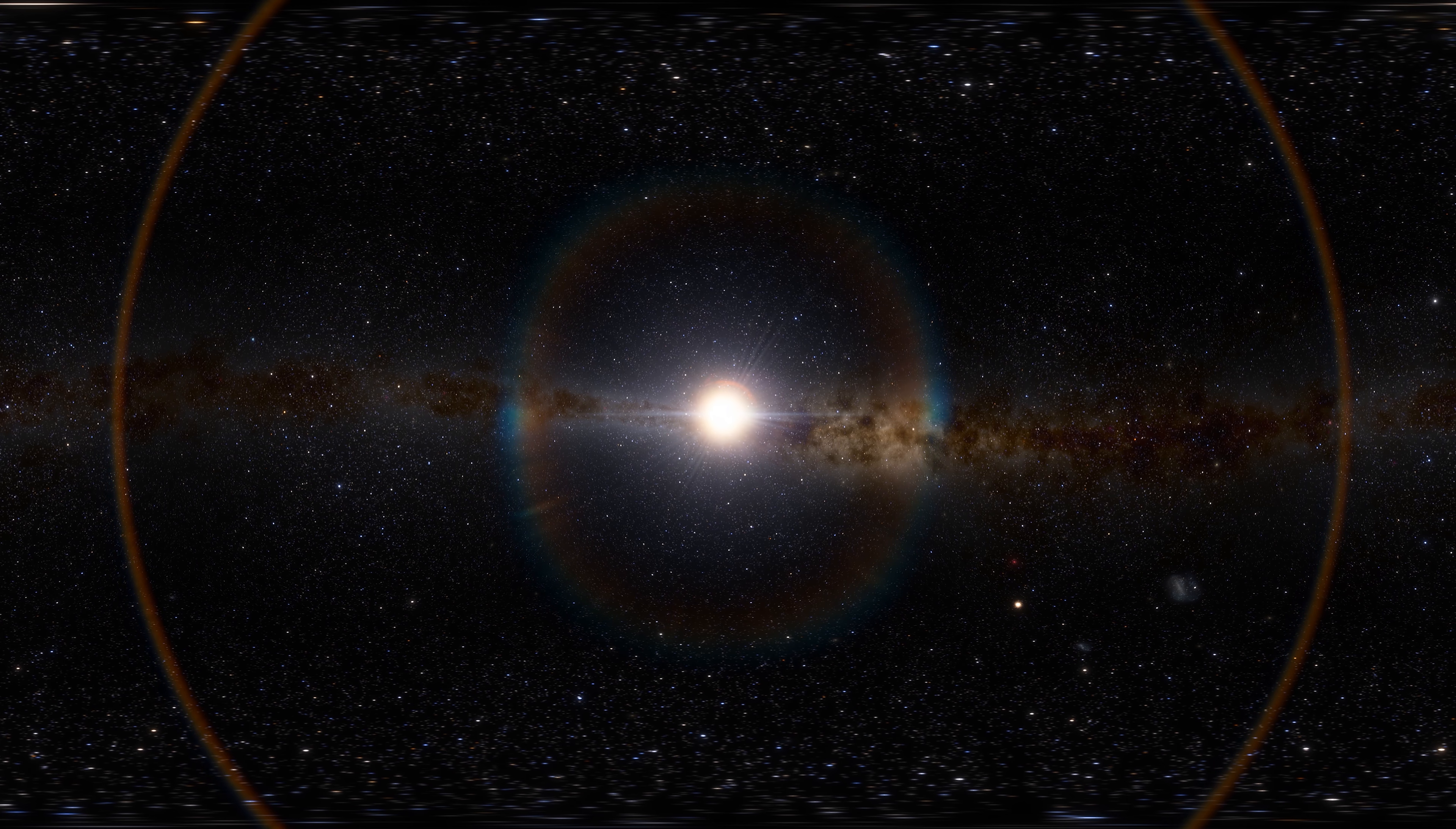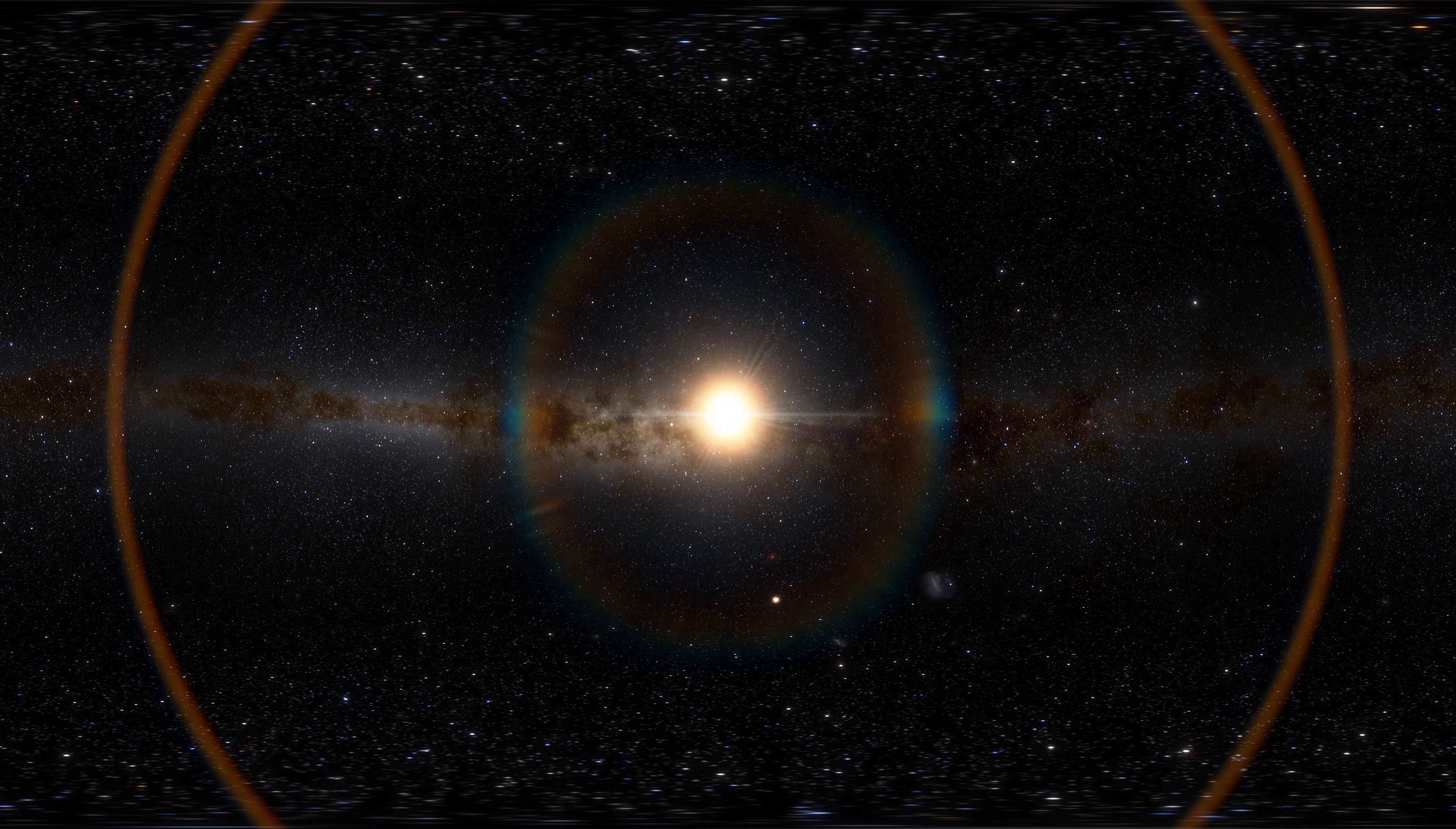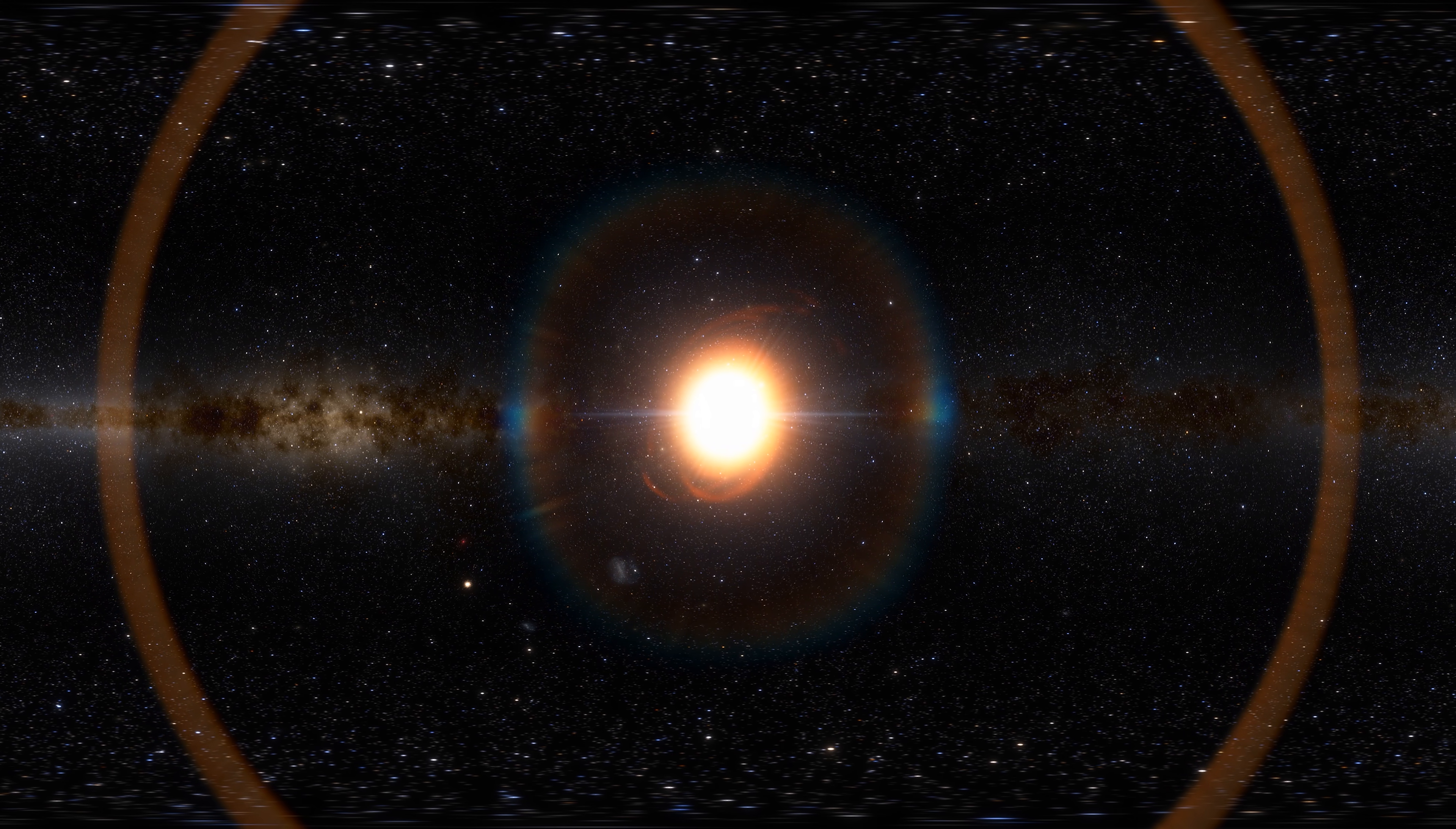The biggest star on our list is UY Scuti. It is a red supergiant placed approximately 9,500 light-years away from the Sun, and it is 340,000 times as bright. Studies have shown that it is a star so large that if it were placed in the center of the solar system, it would absorb the orbit of Jupiter and could even reach Saturn.